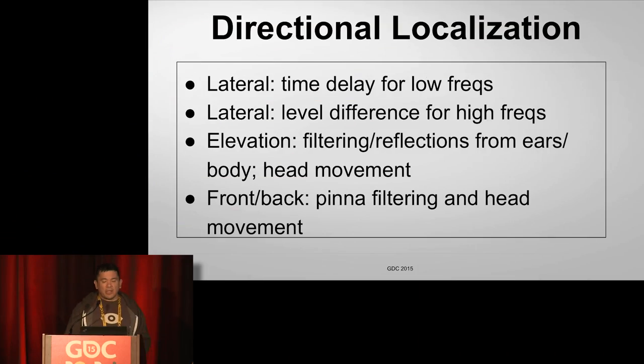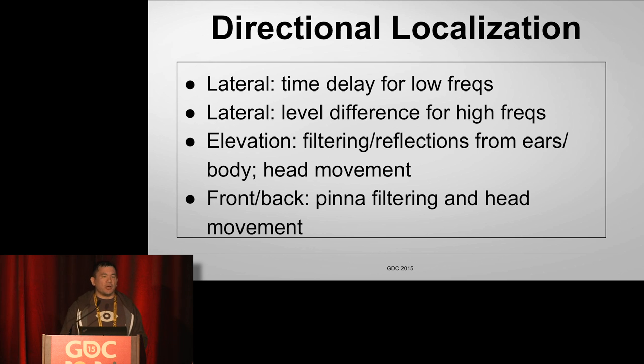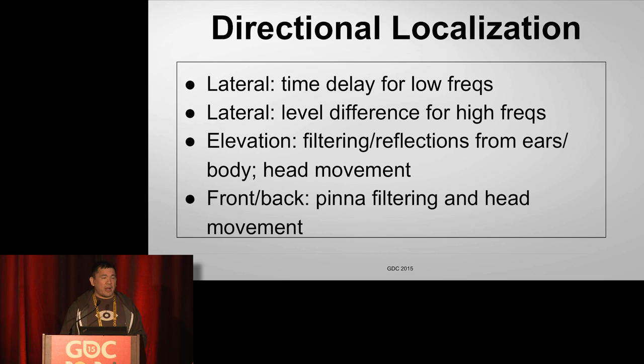For figuring out direction, laterally we have a couple of techniques our brains use. First, we listen for the time delay between low frequencies — if we hear low frequencies from the left a little earlier than from the right, we know the sound is probably coming from the left. For high frequencies, we listen to level differences. High frequencies get masked by our heads through what's called head shadowing. If we hear more high frequencies on one side, that's where the sound is coming from. That gives us left and right.